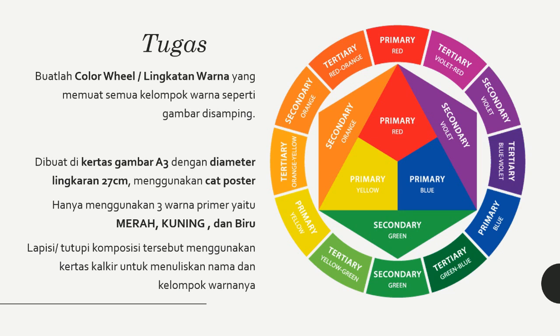Color wheel dibuat pada kertas gambar A3 dengan diameter lingkaran 27 cm, menggunakan cat poster — saya merekomendasikan cat poster Sakura. Hanya menggunakan 3 warna saja yaitu warna primer: merah, kuning, dan biru. Jika sudah membuat color wheel yang sudah diwarnai, lapisilah atau tutupi komposisi ini menggunakan kertas kalkir untuk menuliskan nama-nama dari kelompok warna tersebut. Tugas ini bertujuan agar kalian semua dapat mencampur warna dengan baik dan dapat mengingat warna apa saja yang termasuk kelompok primer, sekunder, dan tersier.